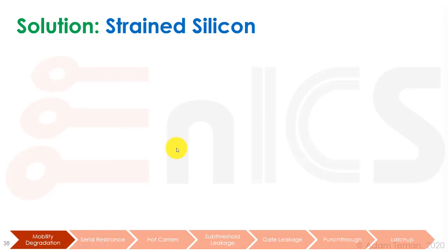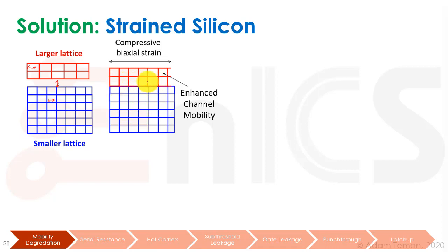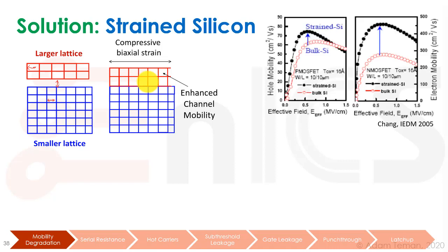The basic solution that's been used and has become very popular is called strain silicon. When we have a channel made out of single crystal silicon, it has a lattice with a certain size. Another material also has a single crystal with a different lattice. When we put them together, the lattices have to meet at the interface, putting strain — either compression or stress — on one of the lattices, changing the lattice regularity at the interface. One of the side effects of that is it changes the mobility.